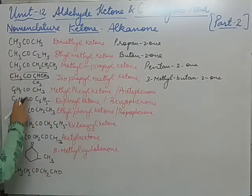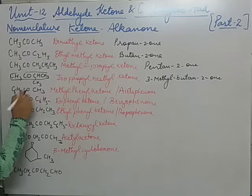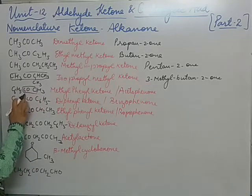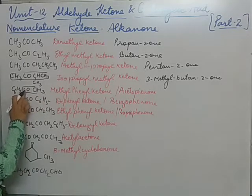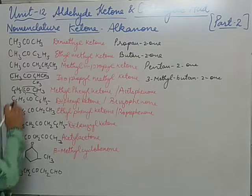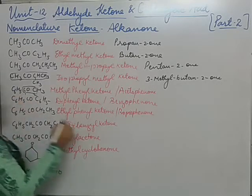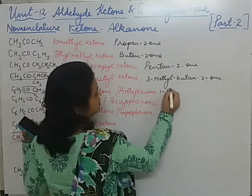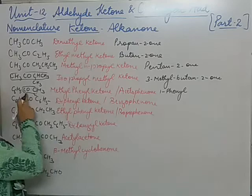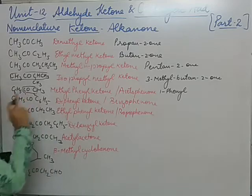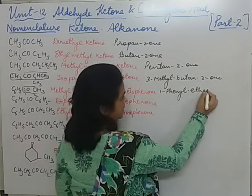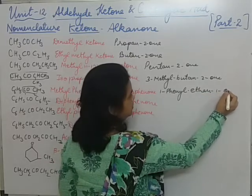Now for this one, we are having a chain of 2 carbons and one phenyl group is present. The numbering is given as 1 and 2. So we will write 1-phenyl. With 1 and 2 carbons, the word root is 'eth', giving us ethan-1-one. So the name is 1-phenylethan-1-one.